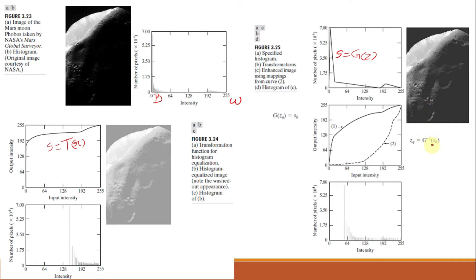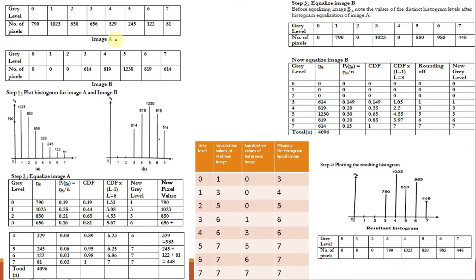Let us understand histogram matching mathematically using one example. This is the problem image, image A, and image B is the reference image. We have to match the histogram of image B to image A. The first step is to plot the histogram for both images and perform histogram equalization for image A as well as image B. When you equalize image A, these are the new gray levels and new pixel values — note them down, as we'll use these values after the final mapping.